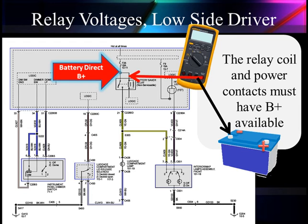Let's start with our relay. We're going to be looking at the interior lamps and the luggage compartment lamp. What we have here, where our voltmeter is connected, is Battery Direct B+. Battery Direct B+ means it will be battery voltage anytime. It's always hot. We're supplying the power contacts and the coil.